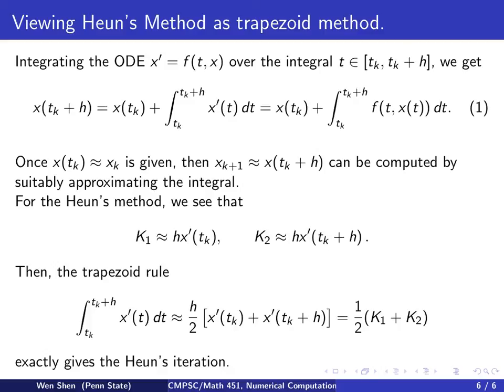Then we apply the trapezoid rule for this integral, using h over 2 of the value at tk, and the value at tk plus h. And then we see we could put K1 in here, and we could put K2 in here as an approximation. And then this gives me exactly a half of K1 plus K2. And putting all these back into this equation, this is exactly Heun's iteration.